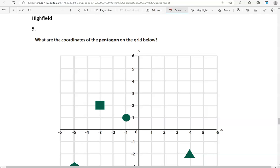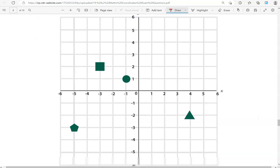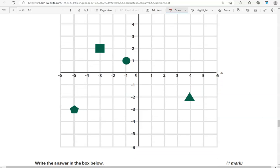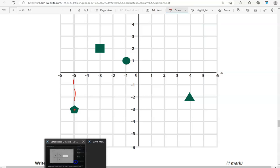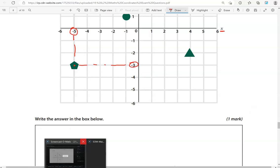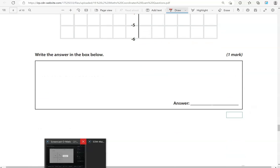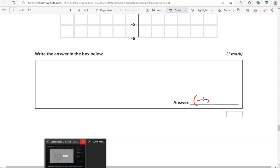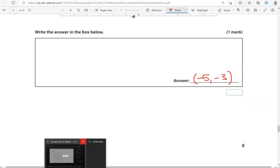What are the coordinates of the pentagon on the grid below? So, where is the pentagon? That's the shape here. It has five sides, five corners. So, coordinates. Minus five, minus three. So, always starting with the x-axis, putting them into brackets.